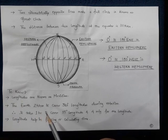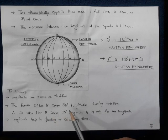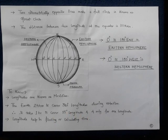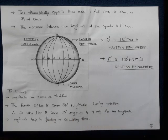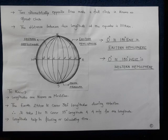The earth takes 24 hours for one rotation and covers 360 longitudes during its motion. So it takes one hour to cover 15 degrees of longitude, and four minutes for one degree of longitude. Longitude has special significance in not only locating places but also finding and calculating time and time differences.